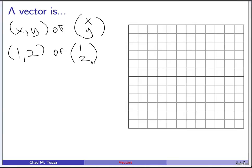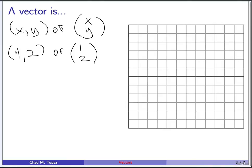Geometrically, what a vector is is an arrow with a tail and a tip. The key is that the tip is always x units to the right and y units above the tail. So to visualize the vector (1, 2): the 1 means go 1 unit to the right of where I started, the 2 means go 2 units up, and then I connect those with an arrow — that's the vector 1 comma 2.